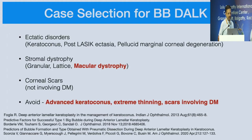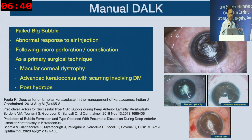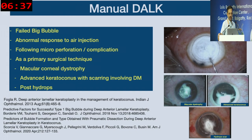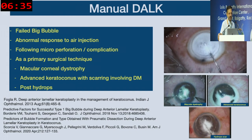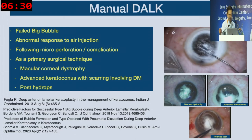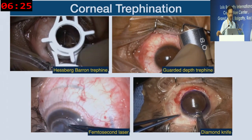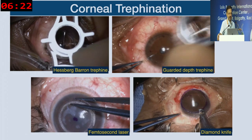Among the indications, you can do DALK for any condition where the endothelium is healthy — commonly for ectatic disorders, corneal scars, and dystrophies. If you have macular dystrophy, very advanced keratoconus, extreme thinning, or scars involving the Descemet's, you would prefer manual DALK. A failed big bubble or abnormal response to air injection, or micro-perforation during surgery, are also reasons to convert to manual DALK. It's important to learn both techniques.